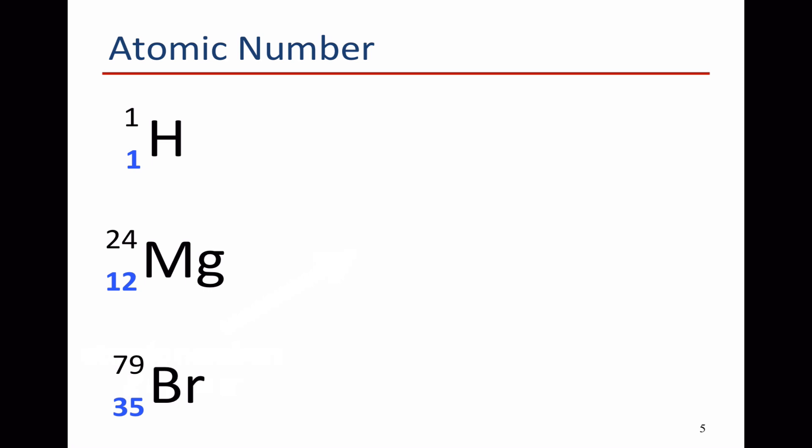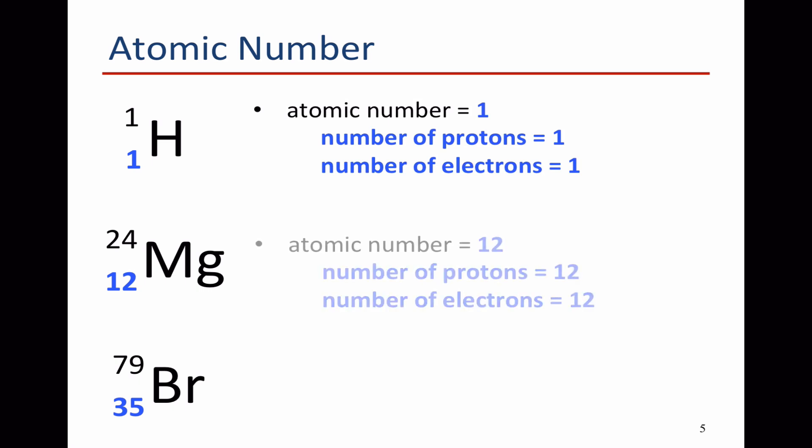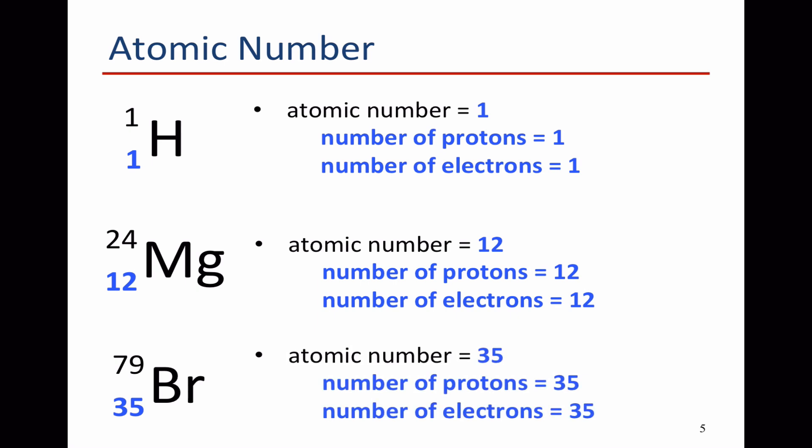So for hydrogen we see a subscript 1, because hydrogen has an atomic number of 1, which means it's got 1 electron and 1 proton. Magnesium has a subscript 12, which means it's got an atomic number of 12, so it has 12 protons and 12 electrons. And bromine has an atomic number of 35, which means it's got 35 protons and 35 electrons.